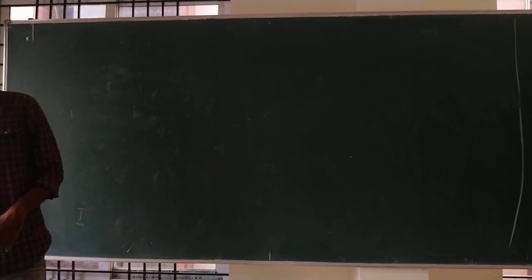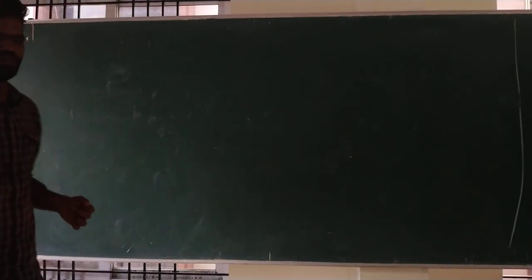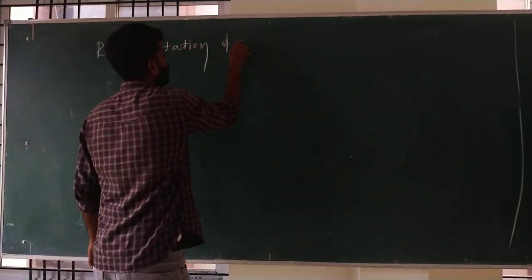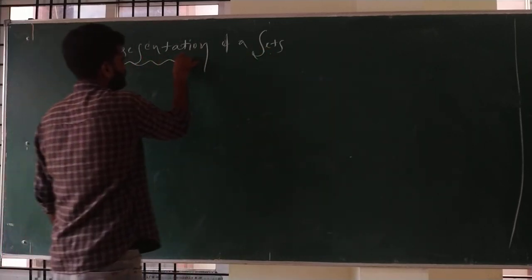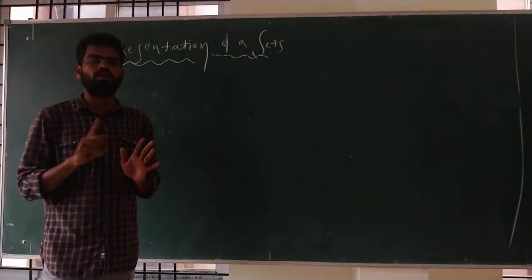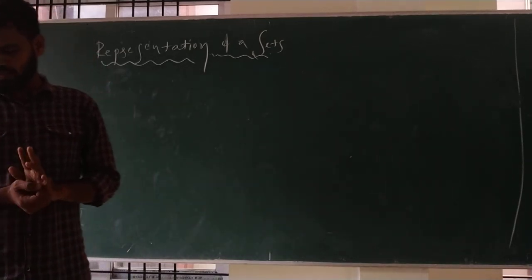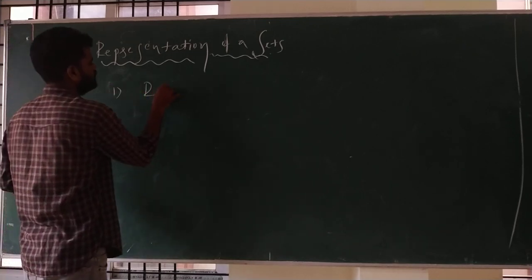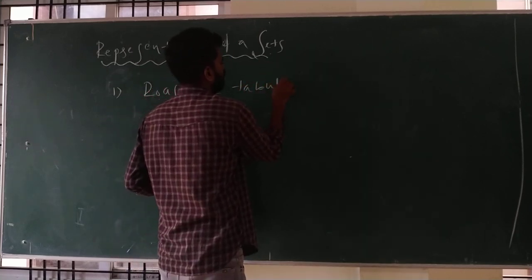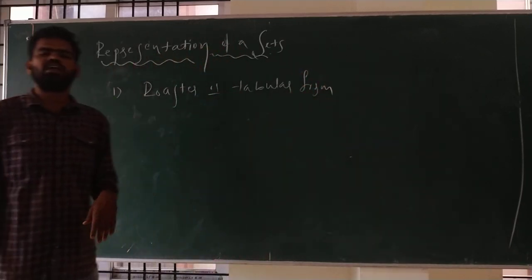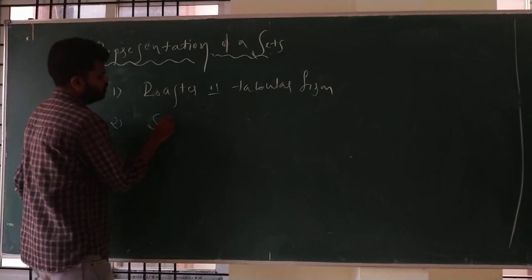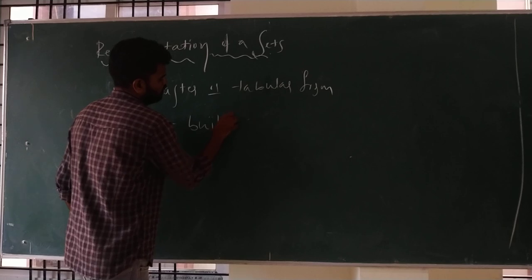Next, a very important topic: the representation of sets. A set can be represented by two ways. The first one is Roster or Tabular form. The second one is Set Builder form.